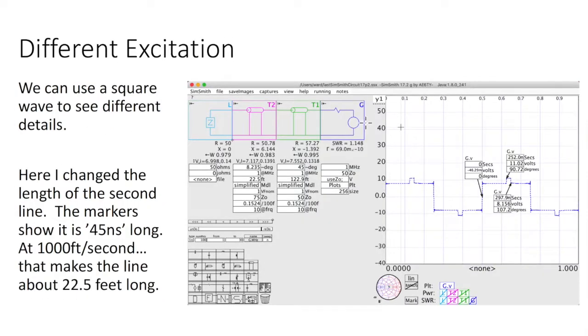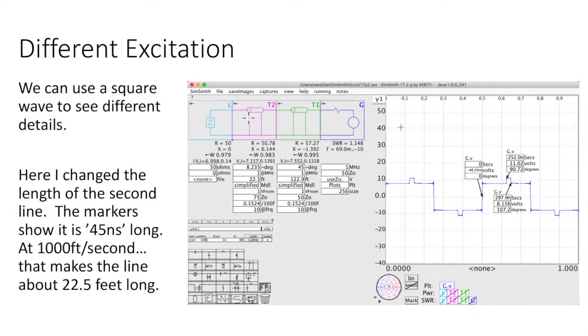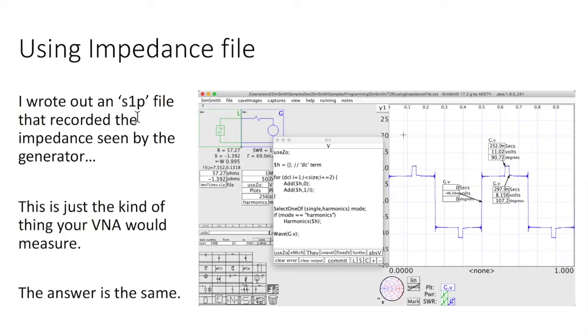Now, you'll notice that all we've really done is dropped a pulse into here and watched the reflections coming back. In fact, what we did was we looked at the impedance here and computed a voltage and plotted this waveform. Here I've taken out that transmission line or that pair of transmission lines and written the impedance seen by the generator. I wrote out into a file and I brought that file back in down here, you'll see.